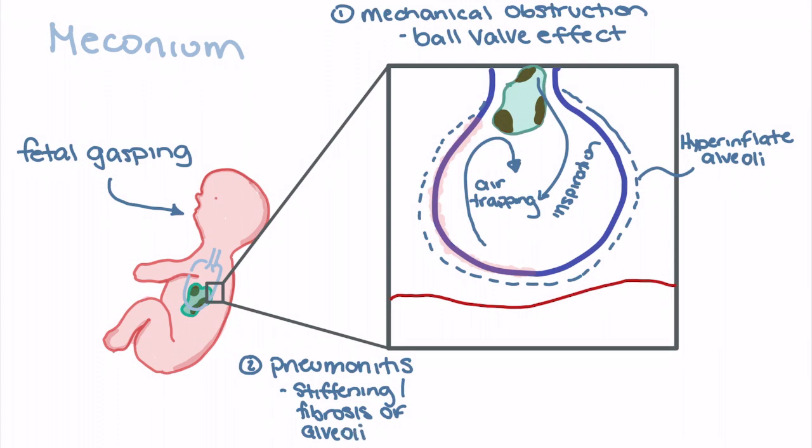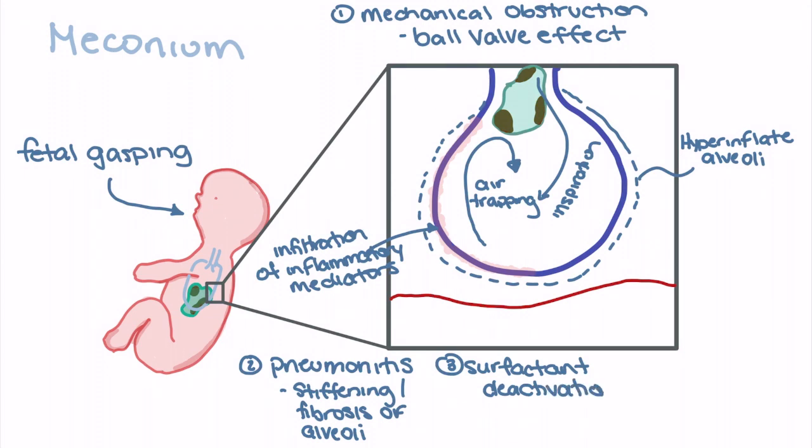Another complication associated with meconium aspiration is surfactant wash. As meconium enters the neonatal airway and alveoli, it can actually deactivate as well as wash out surfactant from the alveoli themselves.